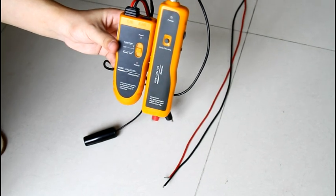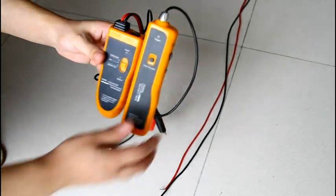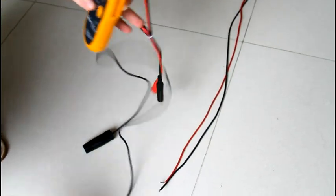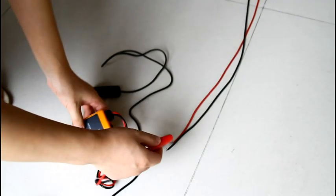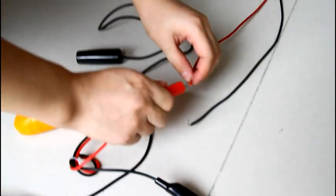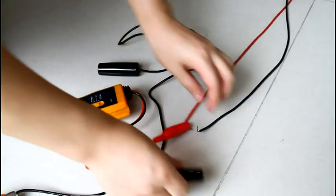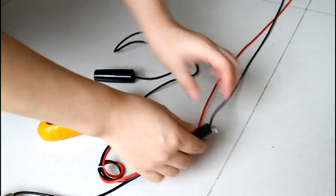Now, let me show how to operate it. First, use the red clip clamp to the red core and black clip clamp to the black one.